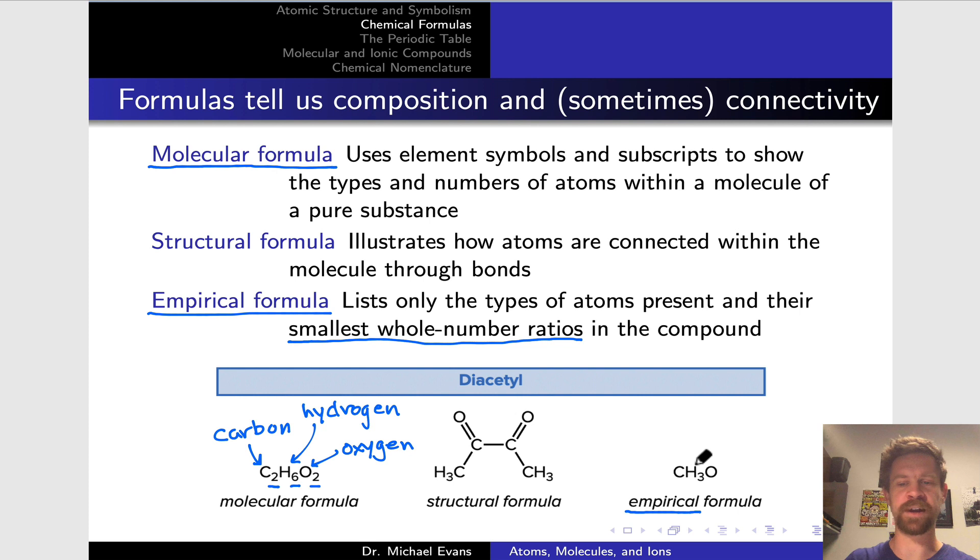The empirical formula for diacetyl is essentially CH3O, where we've taken these three coefficients and divided by two to get the smallest whole number ratios between the elements in this compound. Three hydrogens for every carbon, three hydrogens for every oxygen, and one oxygen for every carbon, for example, are those ratios.